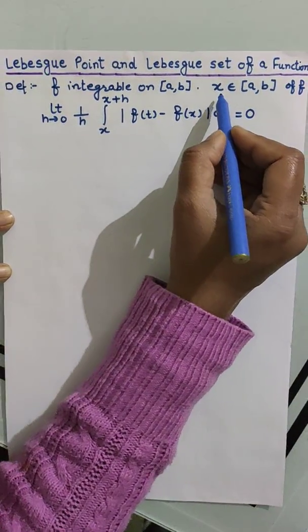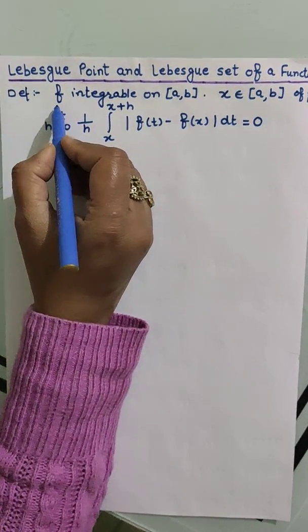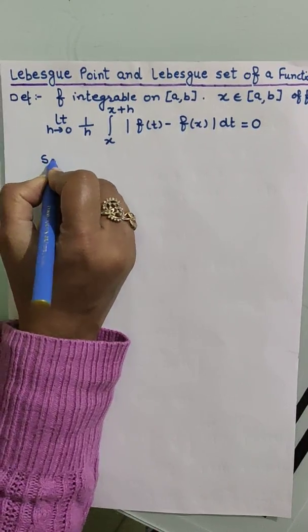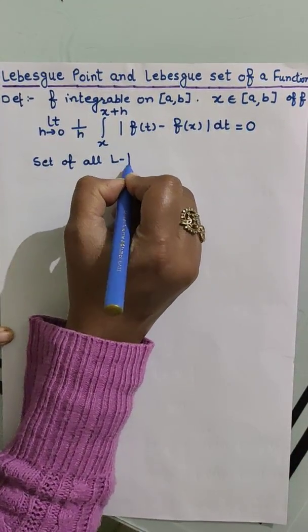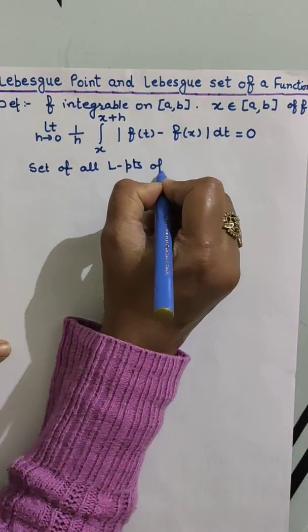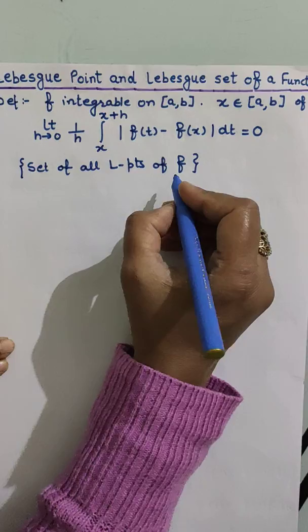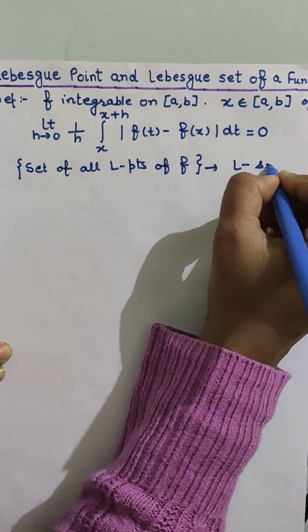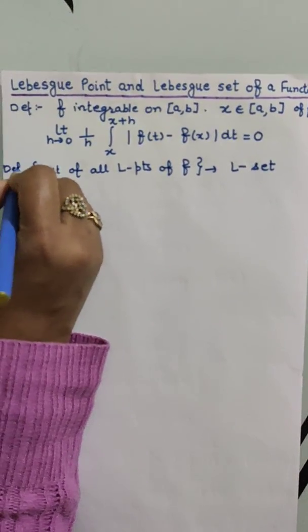we say that x is a Lebesgue point of this function f. And if we collect the set of all Lebesgue points of f, then this set is called the Lebesgue set of the function. So here are the two definitions.